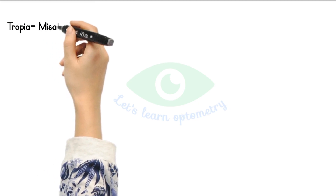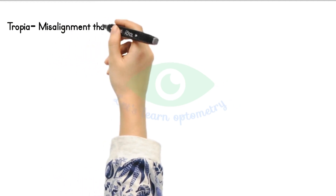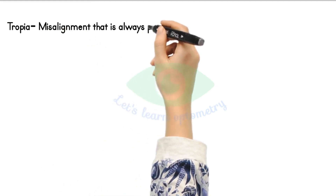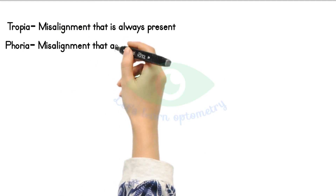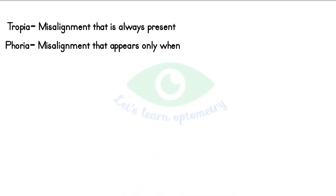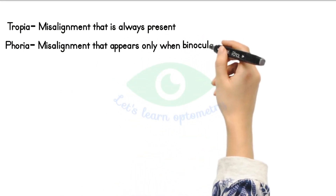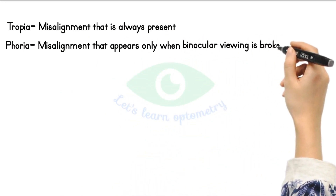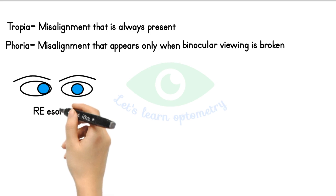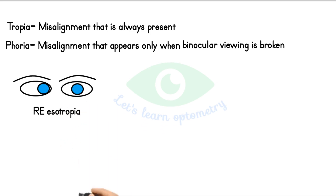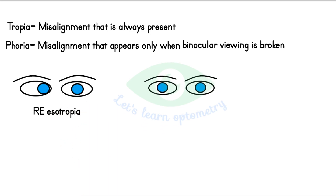As we all know, tropia is the misalignment of the eyes that is always present. But phoria is a misalignment that appears only when binocular viewing is broken. In this picture there is an obvious deviation of the right eye which is turned inwards — it is a case of right eye esotropia. In this other picture the eyes are aligned normally.